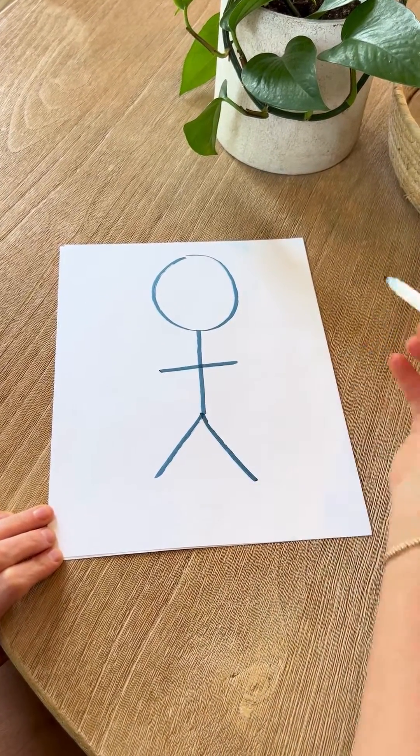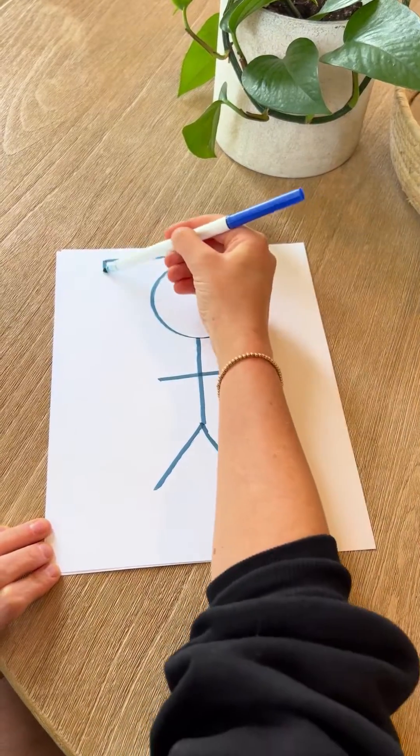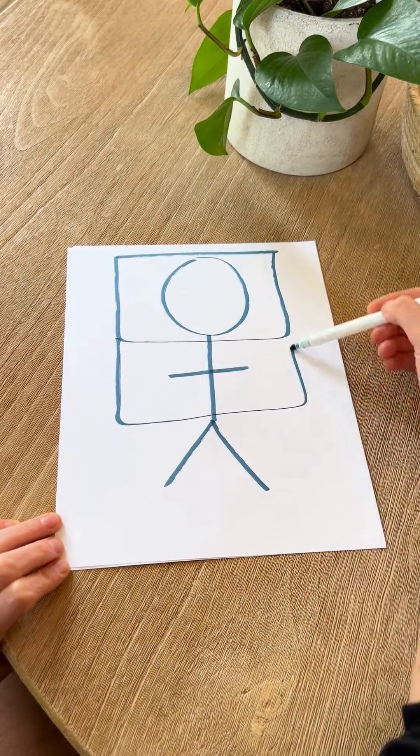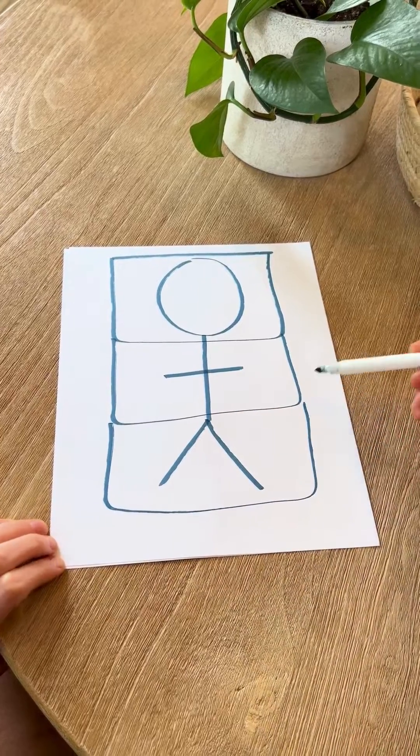The head, the arms, and legs. Then you're going to draw three boxes. One around the head, one around the trunk, and one around the legs.